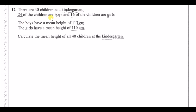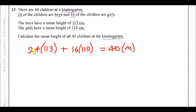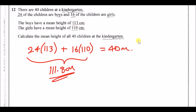Number 12: there are 40 children — 24 boys with mean height 113 cm and 16 girls with mean height 110 cm. This is the weighted mean: (24 × 113) + (16 × 110) = 40 × m. Divide by 40 to get a mean height of 111.8 cm, which makes sense as it falls between 110 and 113.